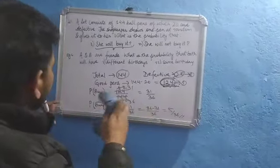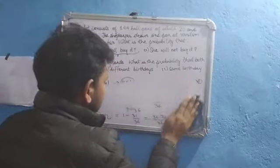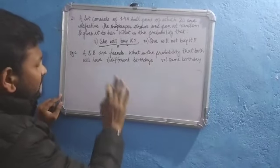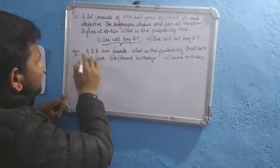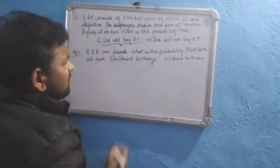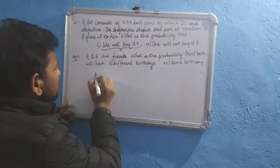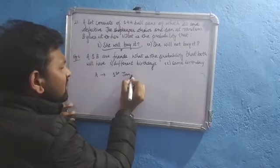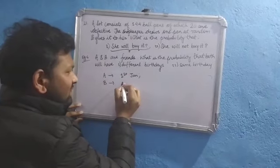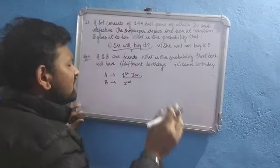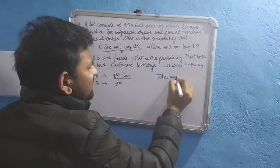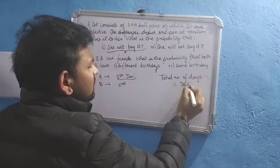Let me quickly go into the second question. A and B are friends — this is example 6. What is the probability that both will have different birthdays? Suppose A is born on 1st January. Then B should not be born on 1st January — B may be born on 2nd January, 3rd January, or any day of the year. Total number of days in a year is 365.